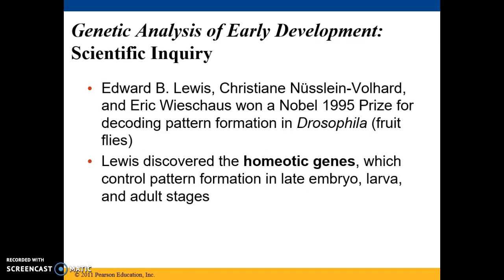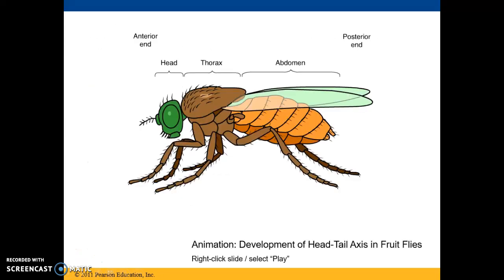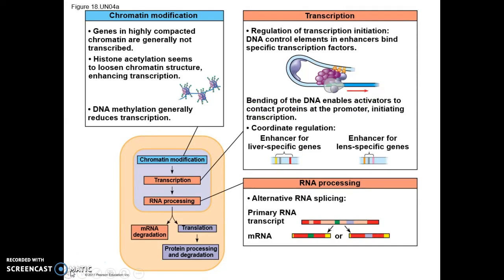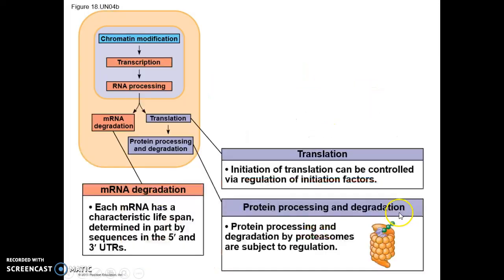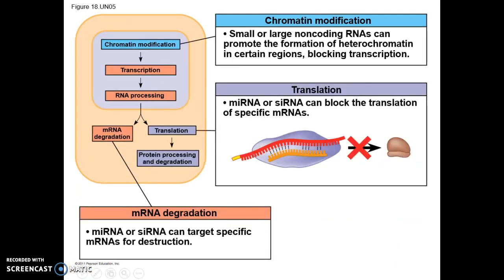A lot of our key discoveries with regard to early development were made by studying the fruit fly, Drosophila. These discoveries include homeotic genes, which control pattern formation in the late embryo, larval, and adult stages. We'll talk more about Drosophila in class. Hopefully through parts 1 and 2 of eukaryotic gene regulation, you have a better understanding that regulation can occur at the DNA level, through transcriptional control, regulation of RNA processing, RNA degradation, translational control, protein processing, and degradation. We've also looked at the role that non-coding RNA can have, along with how expression can lead to different types of cells, especially in early embryonic development. Thanks so much for joining me for Parker Biology.